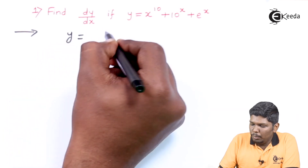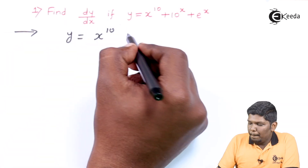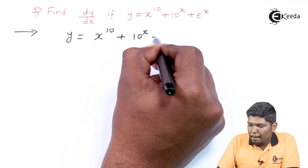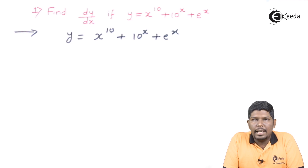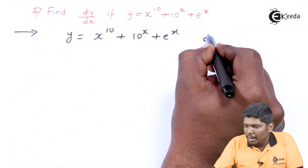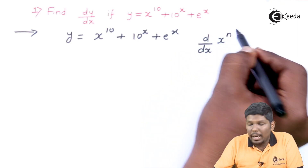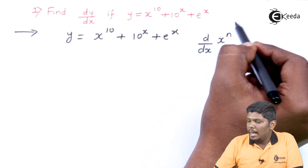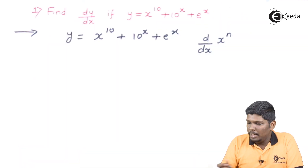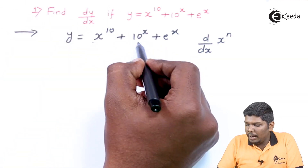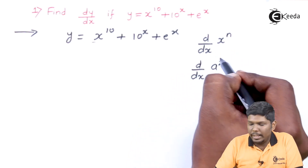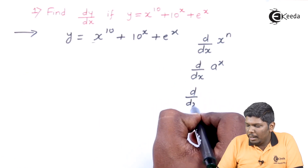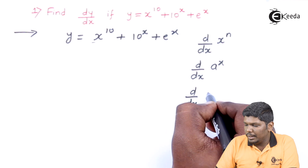We have y equal to x raise to 10 plus 10 raise to x plus e raise to x. There are three different functions with plus signs in between. The first is a pure algebraic function comparable to the derivative of x raise to n, where the base x is the variable and power n is constant. The second and third parts are compared with the derivative of exponential functions a raise to x and e raise to x respectively.